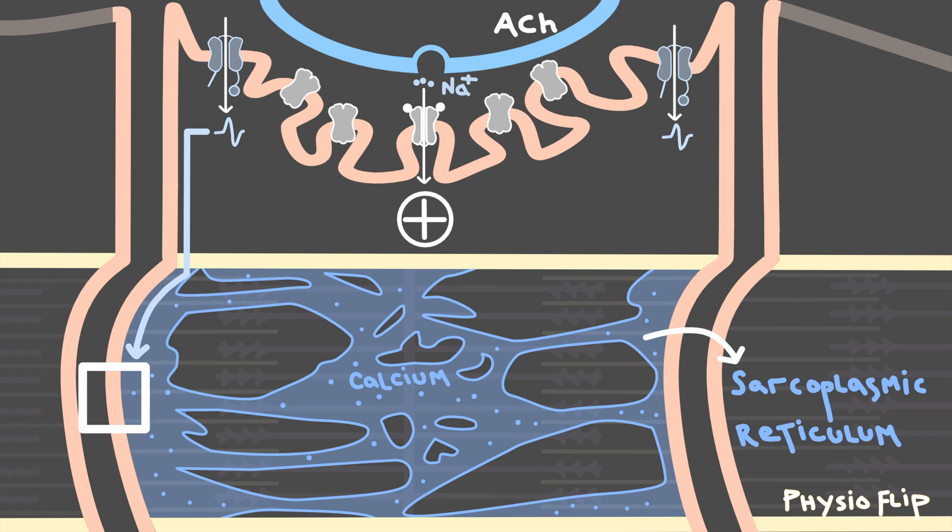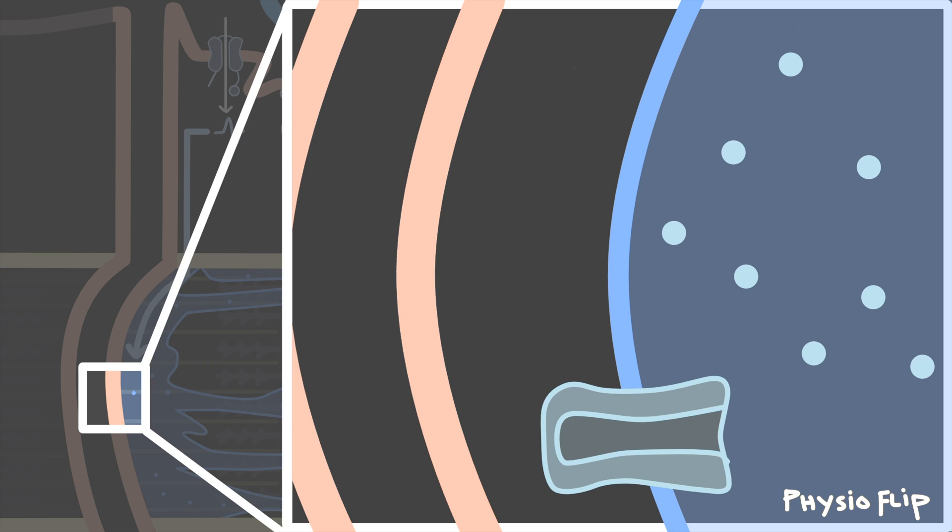And if we zoom in on this section of the cell membrane, I'll show you how the action potential causes this release of calcium. Zooming in, you can see that the SR is packed full of calcium ions. The reason the SR has such a high concentration of calcium is because of this protein transporter, known as the calcium ATPase. Like its name suggests, this protein transporter uses energy in the form of ATP to pump calcium from low concentration on the outside of the SR to higher concentration on the inside of the SR. So this pump is responsible for keeping the calcium concentration very high inside the SR. But to get our muscles to contract, we need to let that calcium out of the SR.